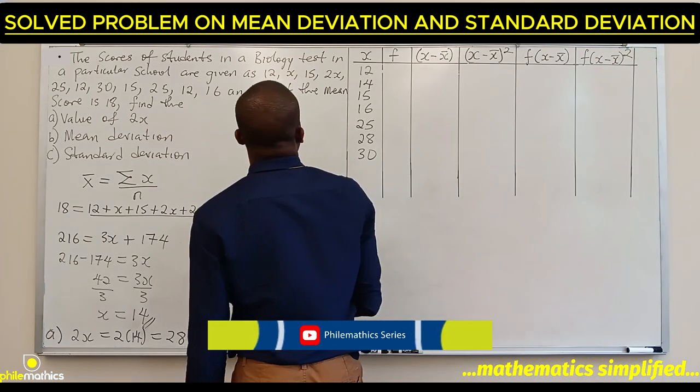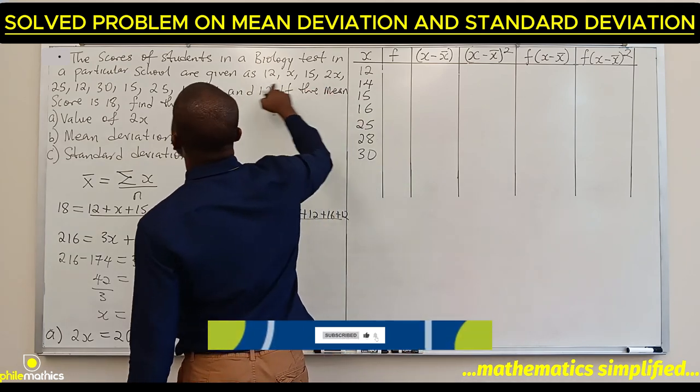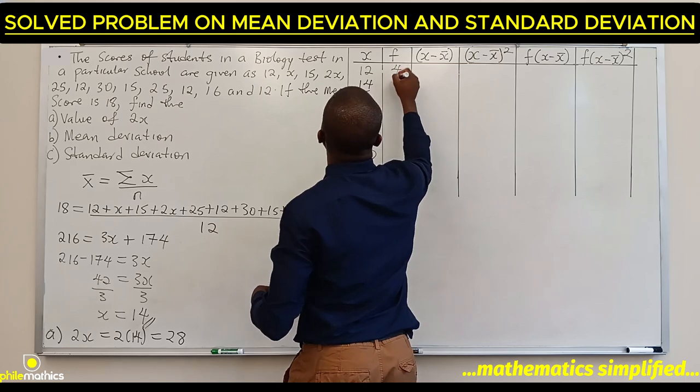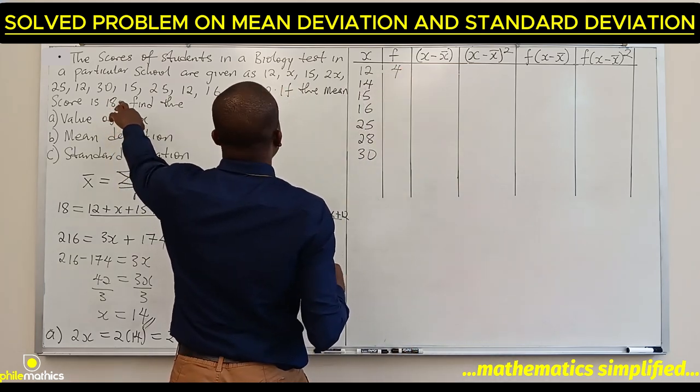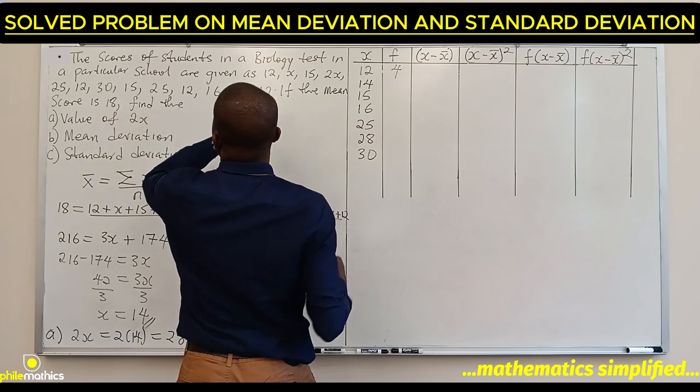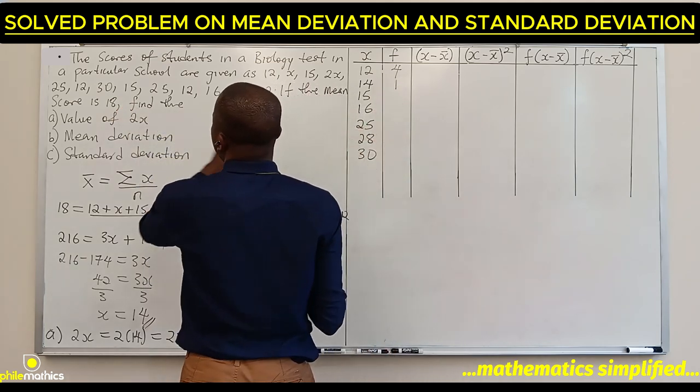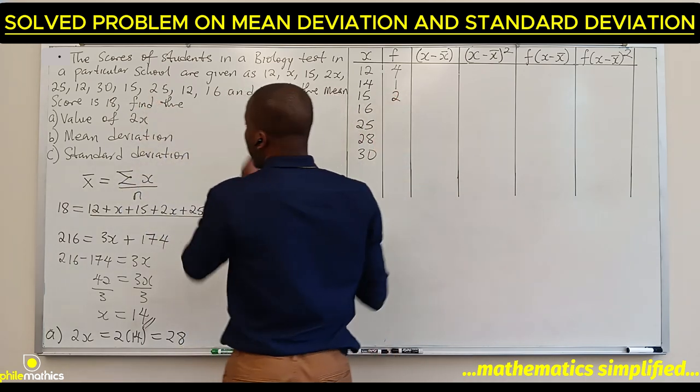The smallest is 12. 12 appears 4 times. 14 appears 1 time. 15 appears 2 times.